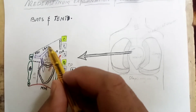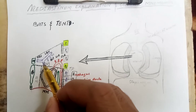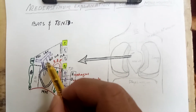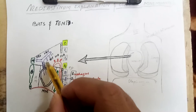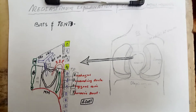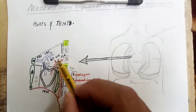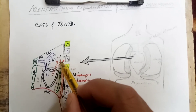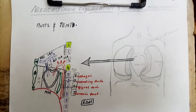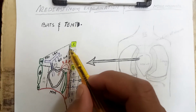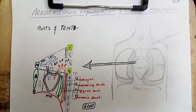The contents of the superior mediastinum are: the left and right brachiocephalic veins, the superior vena cava, the thoracic duct, the left superior intercostal vein, the arch of the aorta, the left subclavian artery, the left common carotid artery, the brachiocephalic trunk, the trachea, the esophagus, and the thymus.